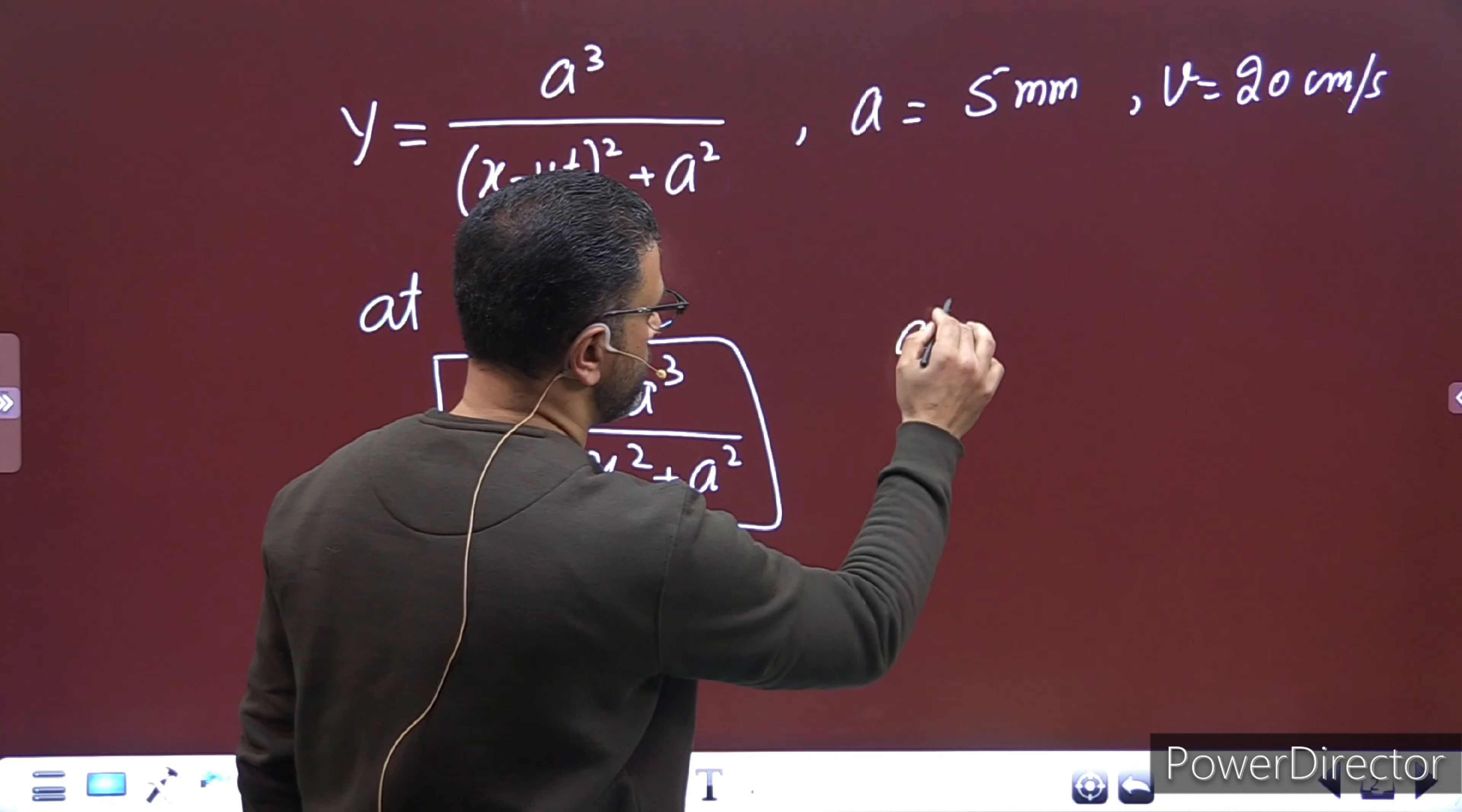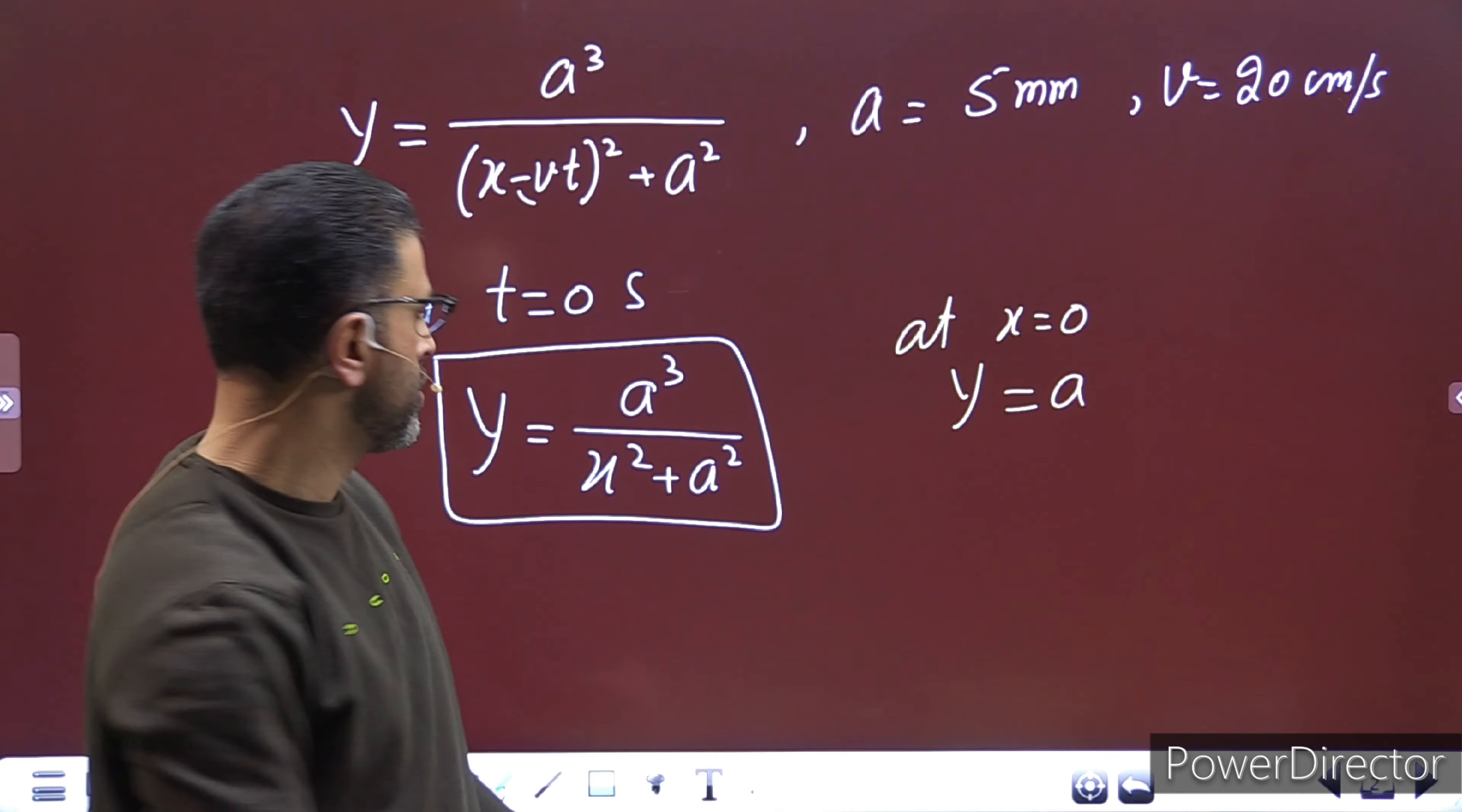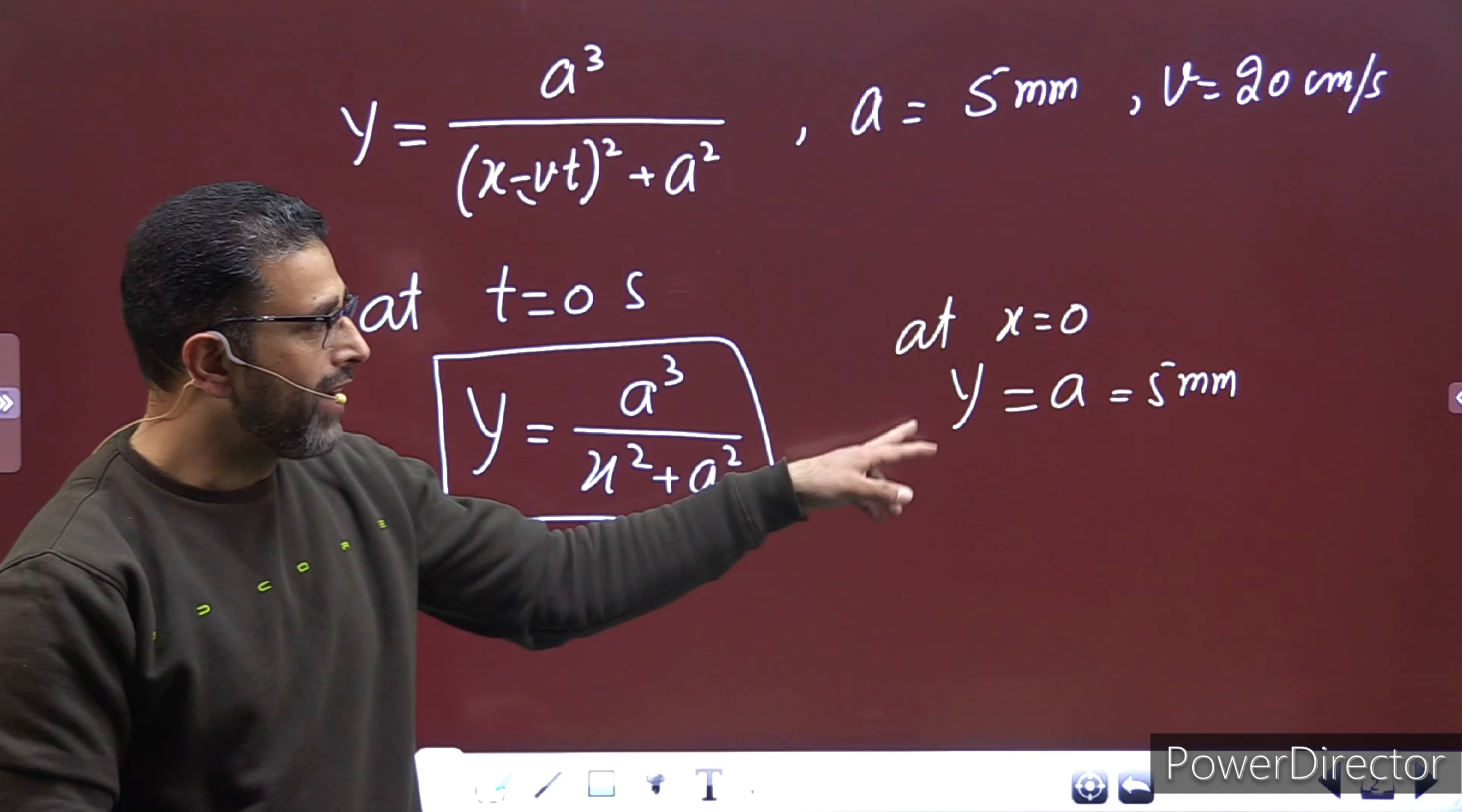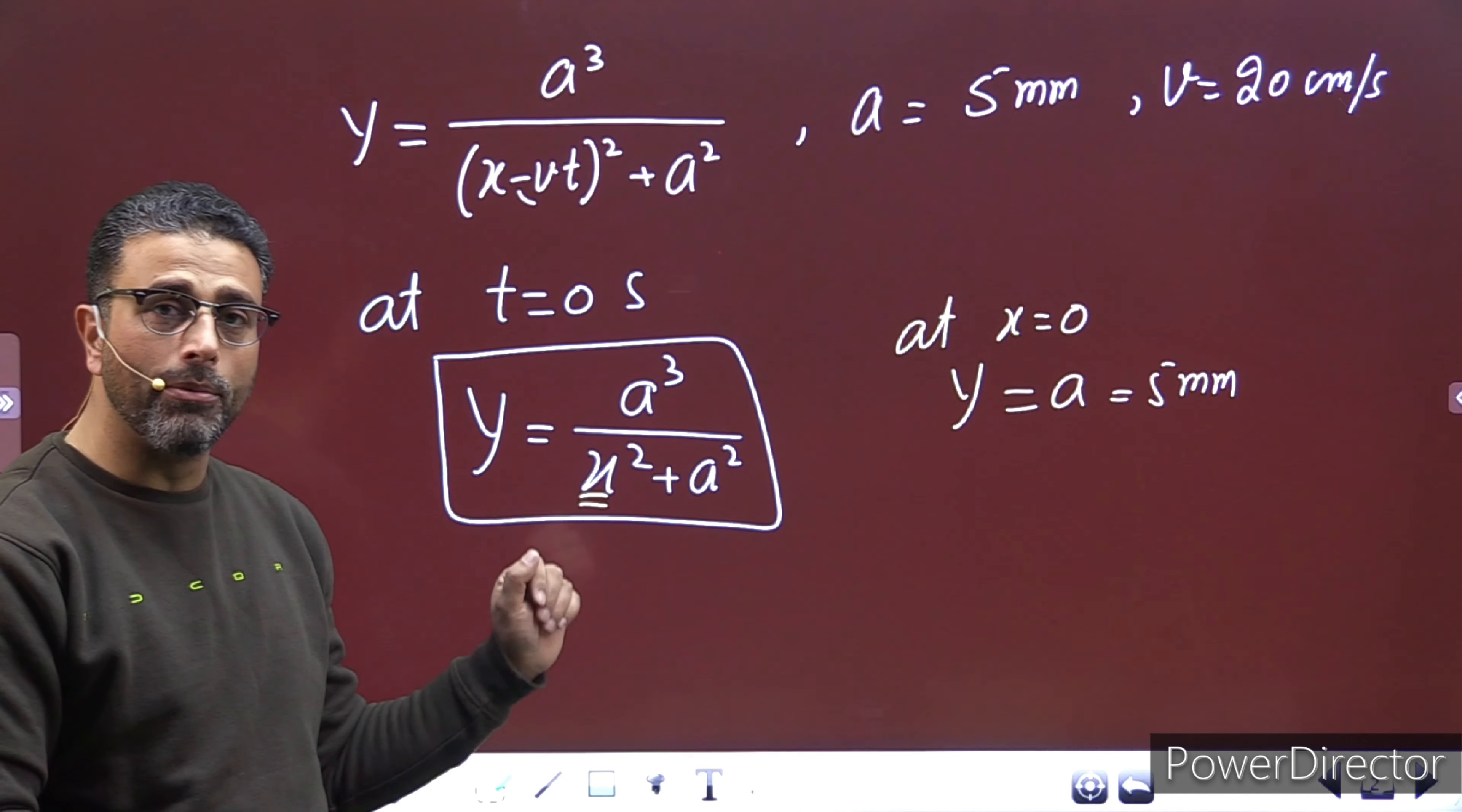At x equal to 0, let's see what is the value of y. If x is zero, then a cube remains, and a square on the bottom, two cancel out, a remains. So y is equal to a. At x equal to 0, y is equal to a, which is given as five millimeters. Five millimeters. Now, I want you to note in this, that this value of y is the maximum value. The maximum value.